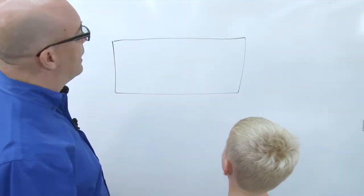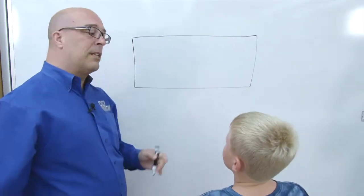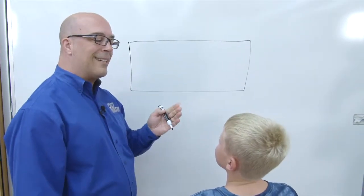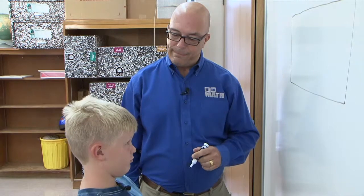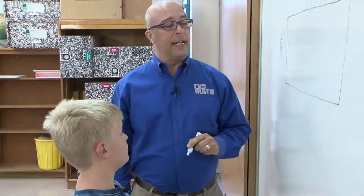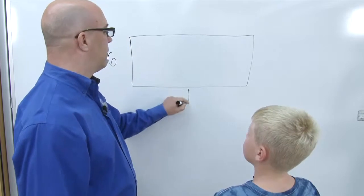All right, so I'm gonna draw this rectangle and why don't you give me some numbers. Give me a number between two and nine. Six. All right, so we'll make this six. And how about a number between seven and twenty? Fifteen. All right, we'll make this fifteen.